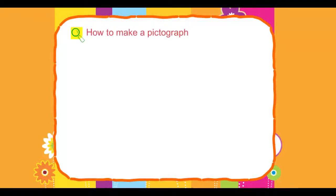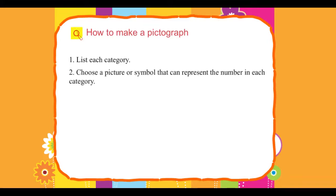How to make a pictograph. 1. List each category. 2. Choose a picture or symbol that can represent the number in each category.